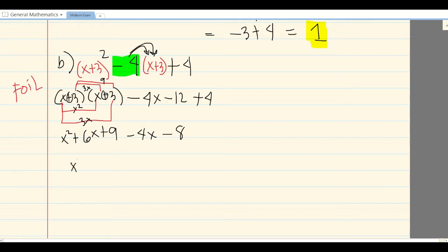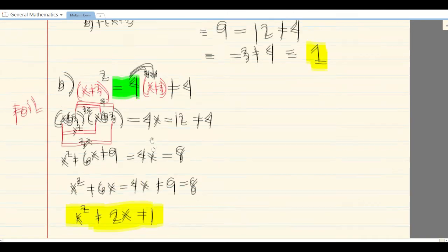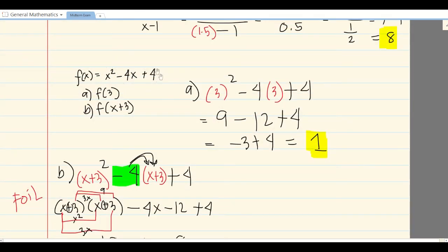Combine like terms: x² plus 6x, subtract 4x, plus 9 minus 8. 6 minus 4 is 2, so x² plus 2x, plus 9 minus 8 is plus 1. That's the final answer.